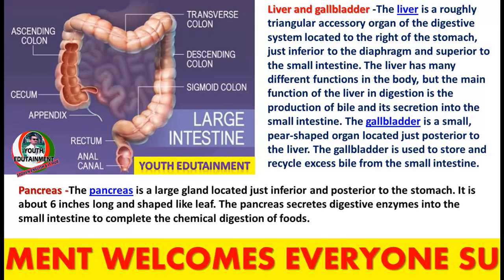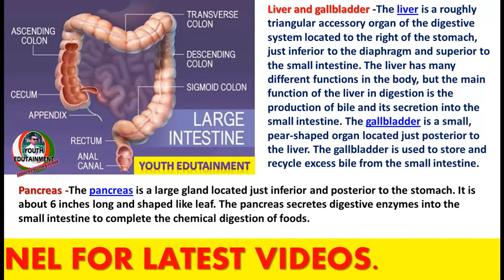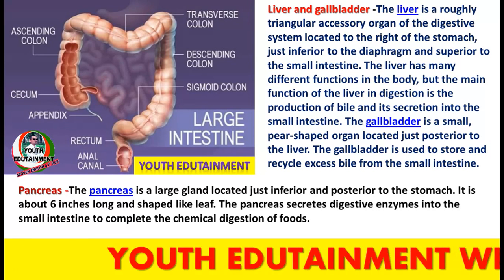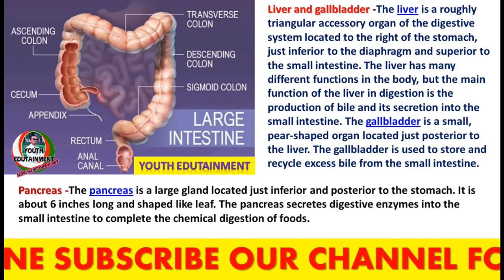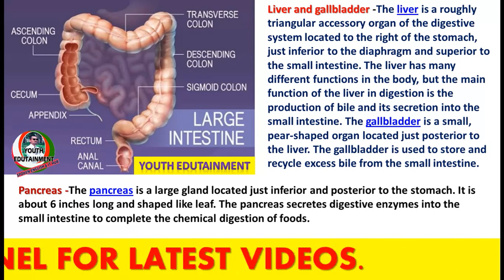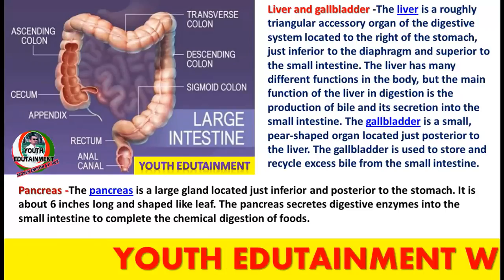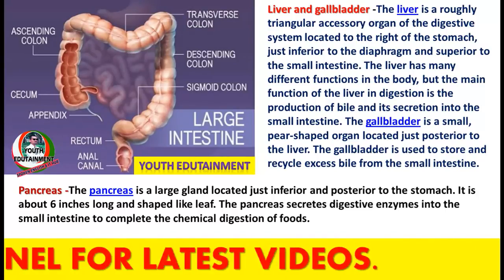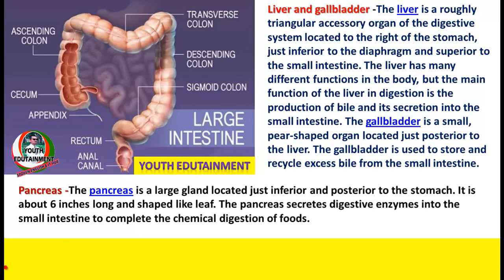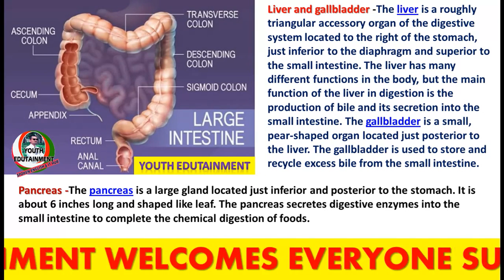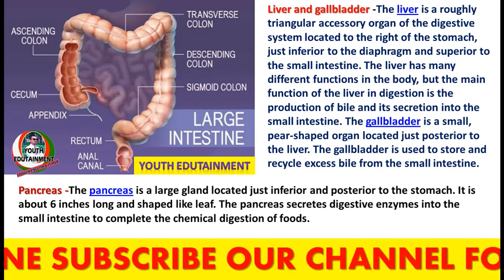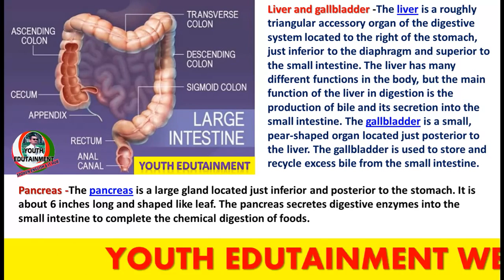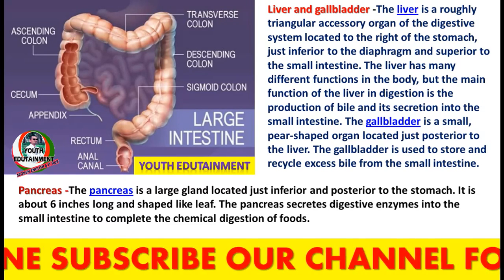The liver is a roughly triangular accessory organ of the digestive system, located to the right of the stomach. The pancreas is a large gland located just inferior and posterior to the stomach; it is about 6 inches long and shaped like a leaf.